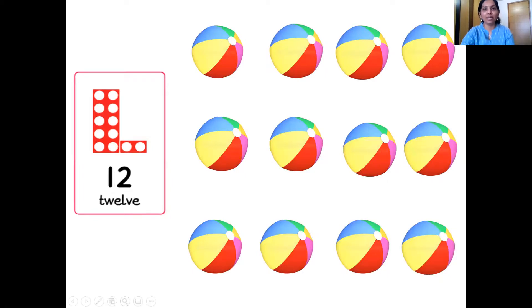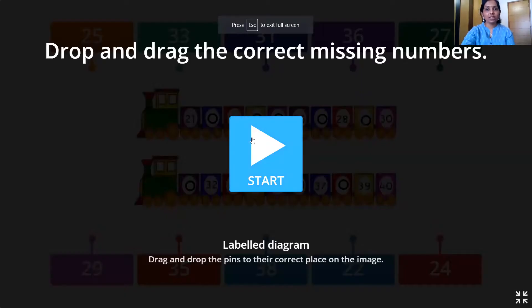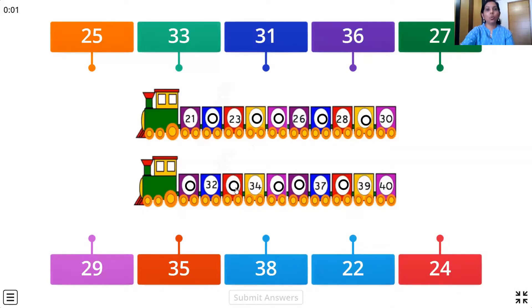Very good, children. Well done. Now it's time for activity time. Let's see what activity we have. Here comes our activity — we have to drag and drop the correct missing number. Wow, this is our train, and the numbers are missing on the compartments, so we are going to drag and drop them.